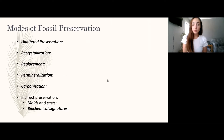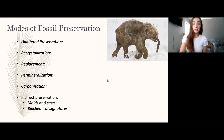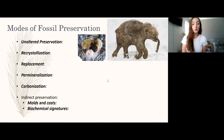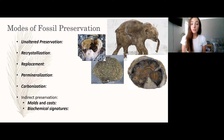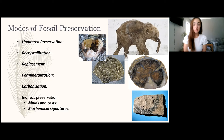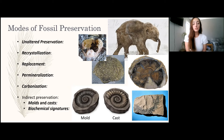There are different modes of fossil preservation. We'll cover: unaltered preservation such as freezing of a mammoth; recrystallization such as aragonite into calcite in a mollusk shell; replacement such as replacement of aragonite or calcite with pyrite; permineralization such as opalization of petrified wood caused by precipitation of silica; carbonization, where carbon-rich materials are preserved as a thin film; and indirect preservation such as molds, casts, and biochemical signatures.